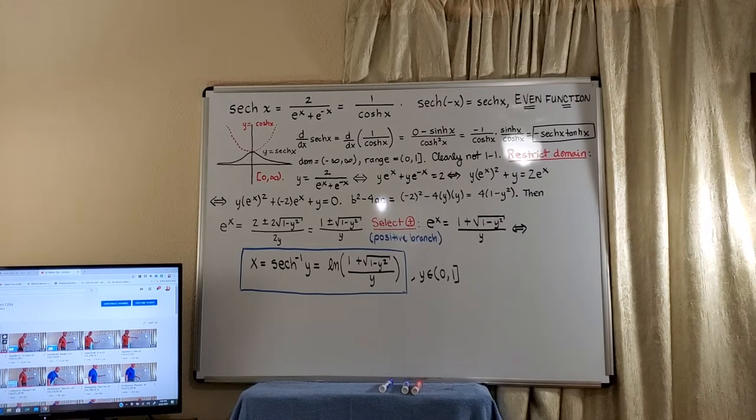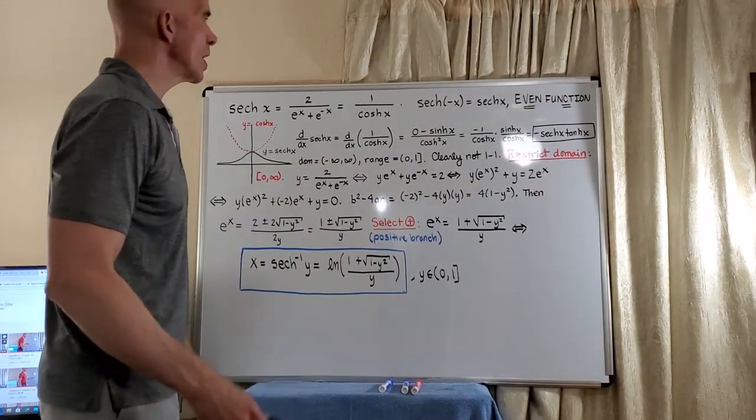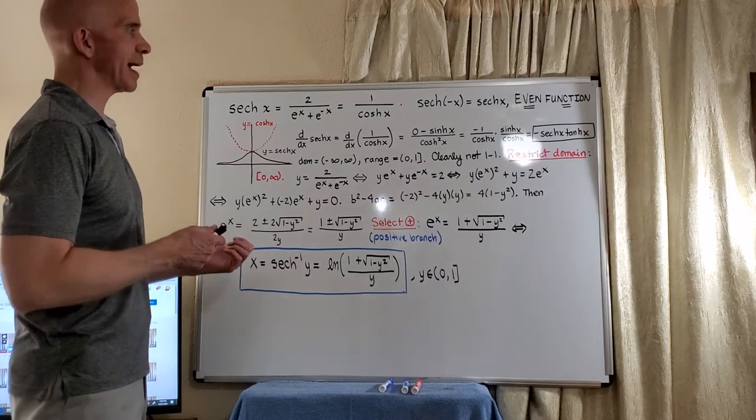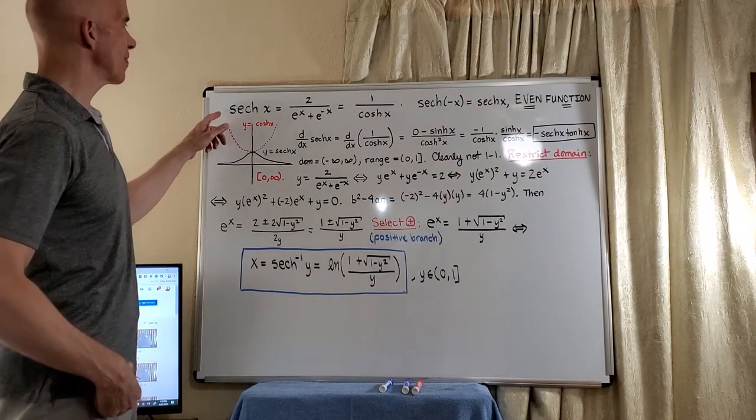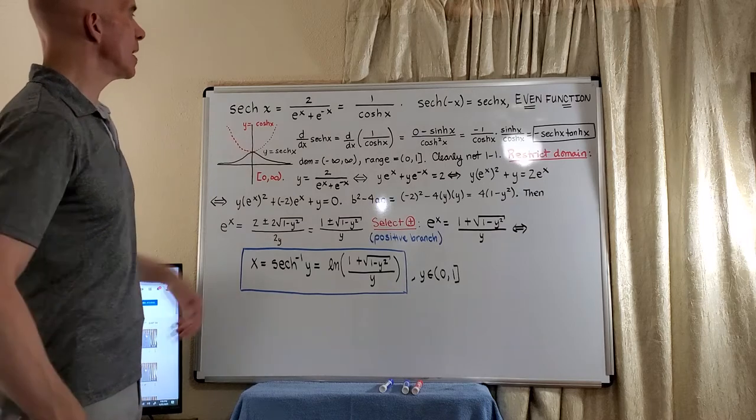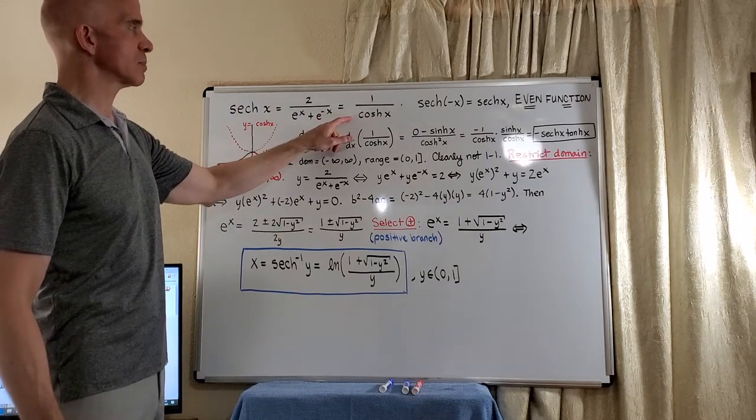Let's look at the hyperbolic secant function. As I've said before, we have many parallels between the hyperbolic functions and the regular trig functions. So we define the hyperbolic secant to be the reciprocal of the hyperbolic cosine.